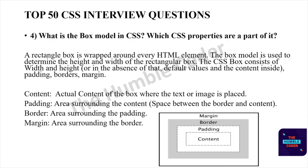What is the box model in CSS? A rectangle box is wrapped around every HTML element. The box model is used to determine the height and width of the rectangle box. The CSS box consists of width and height, and the content inside includes padding, borders, and margins. Content is the actual content of the box where text or image is placed. Padding is the area surrounding the content; border surrounds the padding; and margin is the area surrounding the border.